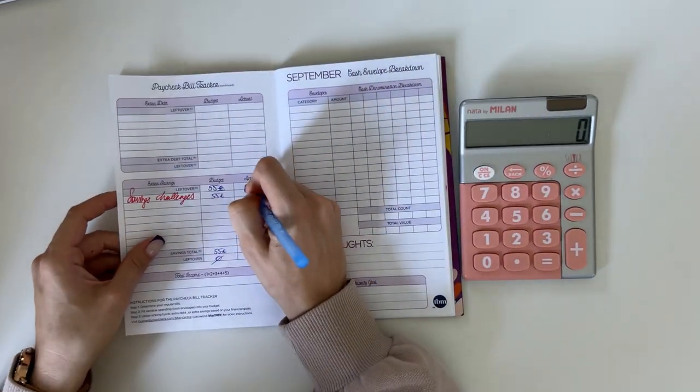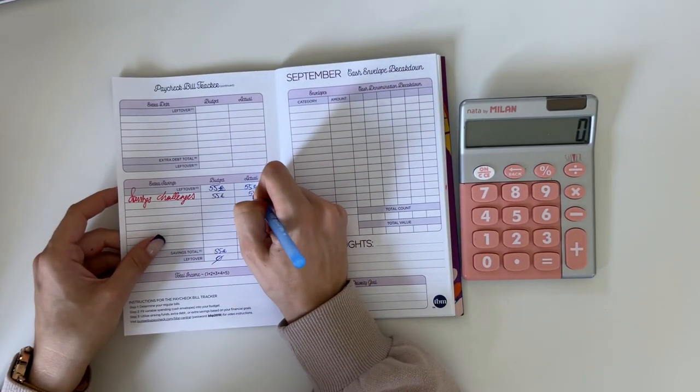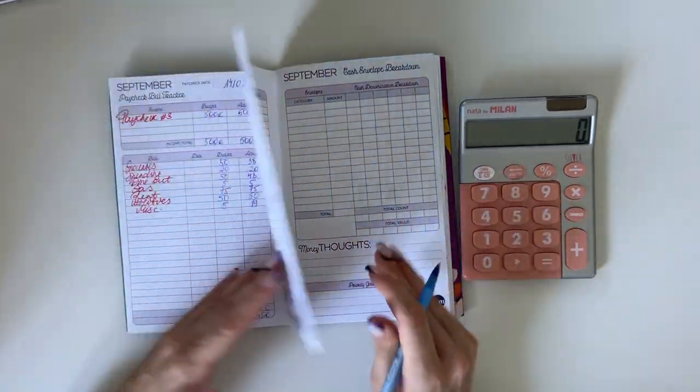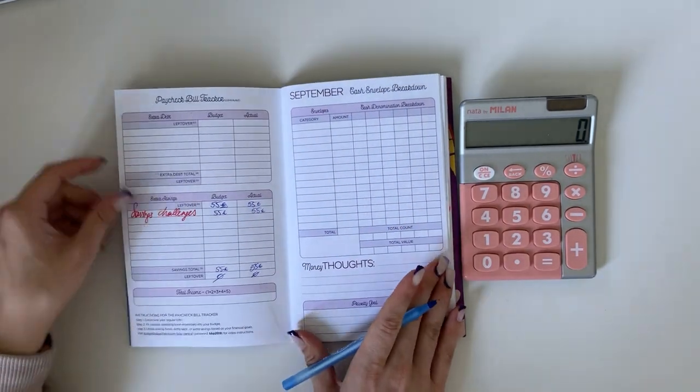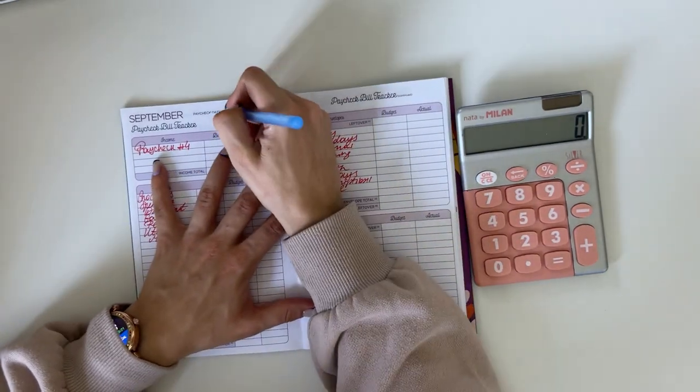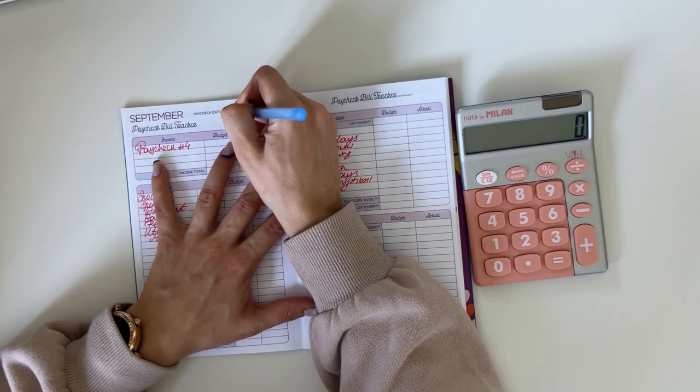110 minus 55 is 55 and we put all of that into our savings challenges. We closed out week three with zero euros, which means that each euro of our income has a place to go into our budget, which is what we want to have.